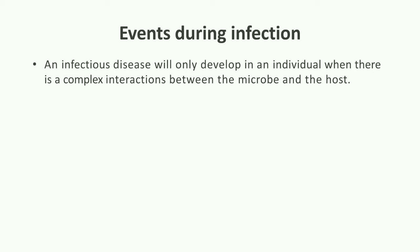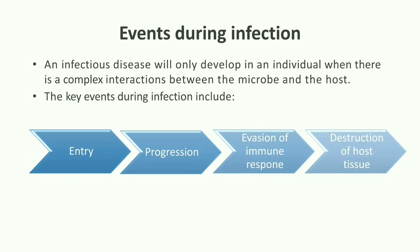A number of events are responsible for initiation of infection. An infectious disease will only develop in an individual where there is a complex set of interactions between the microorganism and the host. The key events which occur during infection are: the entry of the pathogen into the host tissue; progression, which includes colonization of the bacteria into the host tissue; evasion of the immune response elicited by the host; and finally, destruction of the host tissue by the pathogen.